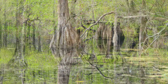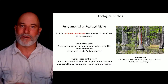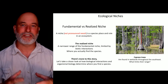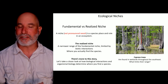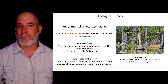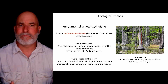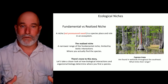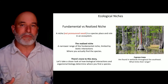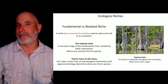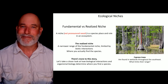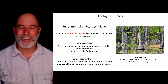But that's not where we always find them — that more restricted location is called the realized niche. The realized niche is a narrower range within the fundamental niche, limited by biotic interactions — how species interact with each other. We find cypress trees in wetlands, but outside their fundamental niche they're limited by water availability: too dry in the west, too cold farther north. There's a lot more to this story.